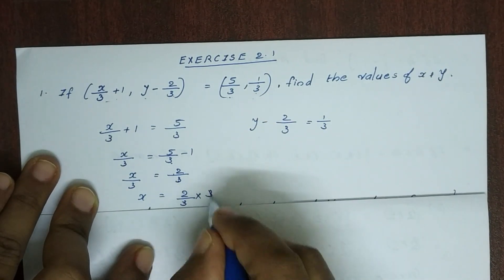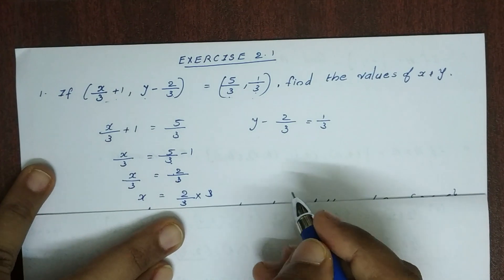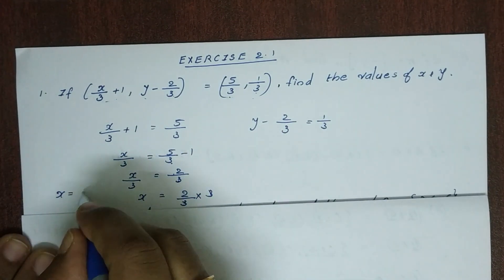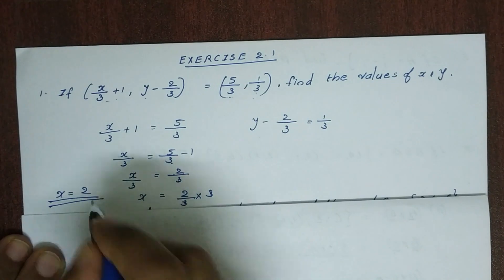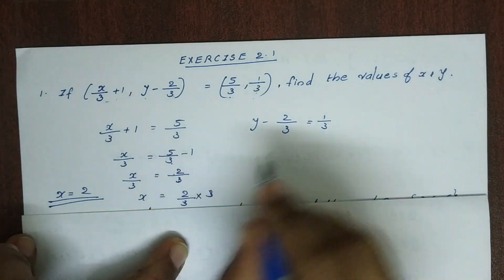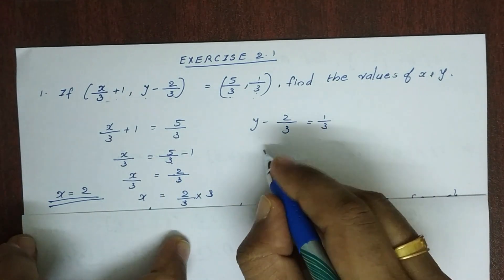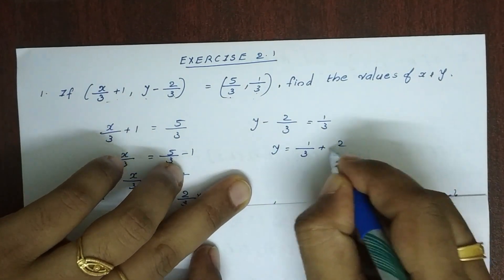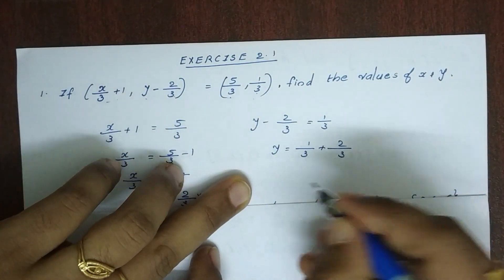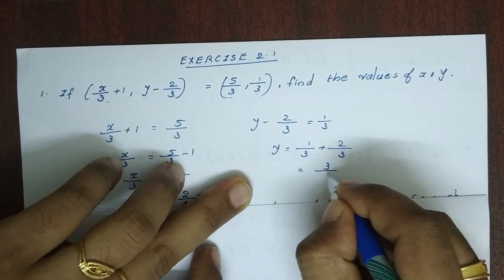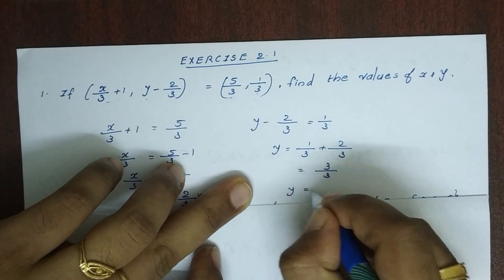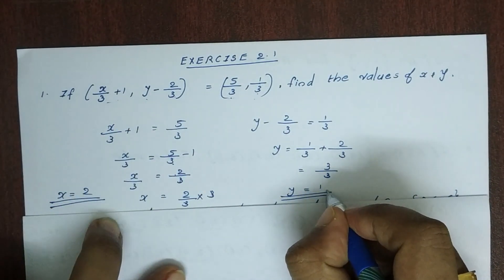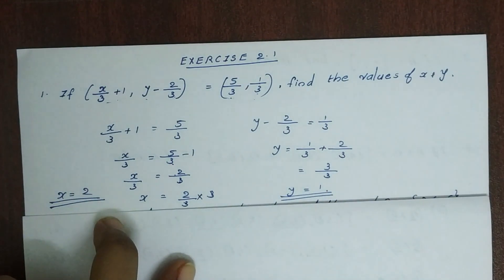For y: y − 2/3 = 1/3, so y = 1/3 + 2/3 = 3/3 = 1. Therefore y = 1 and x = 2.